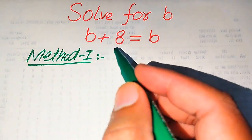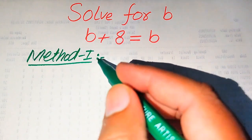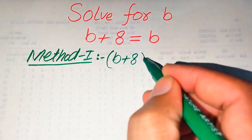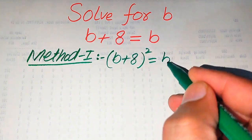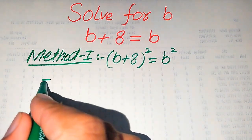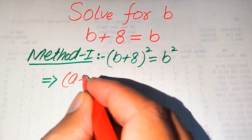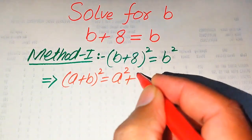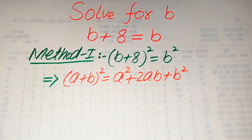In the first method, in order to find the values of B, we need to apply squaring on both sides. When you square both sides it will be written as (B + 8)² equals B². Here we use the algebraic formula: (A + B)² = A² + 2AB + B².